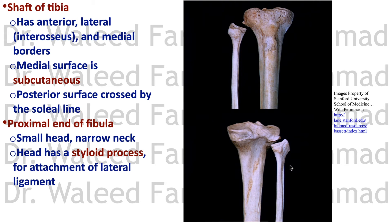The proximal end of the fibula is a thin bone with a tapering neck. The neck is liable to fractures, and the common peroneal nerve is related to the neck of the fibula, making it liable to injury. The fibula has a head with a styloid process projecting from it. This styloid process provides attachment for the fibular collateral ligament, also known as the lateral ligament of the knee.